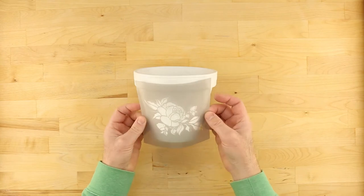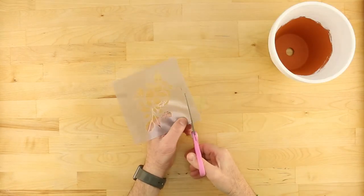Once you've decided on the placement of the first design, mark and trim the stencil to fit the curvature of the flower pot.